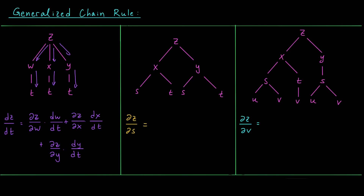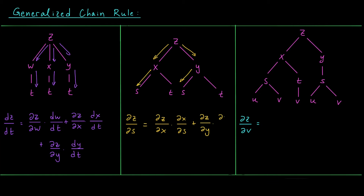In the second example, we have two independent variables, s and t, down at the bottom. So in this case we're actually looking for a partial derivative — the partial derivative of z with respect to s. The process is almost identical, except now we only follow the branches that lead from z to s. Following the left branch, we get partial z by partial x times partial x by partial s — this time it is a partial derivative because x depends on two variables. Then the right branch gives partial z by partial y times partial y by partial s.